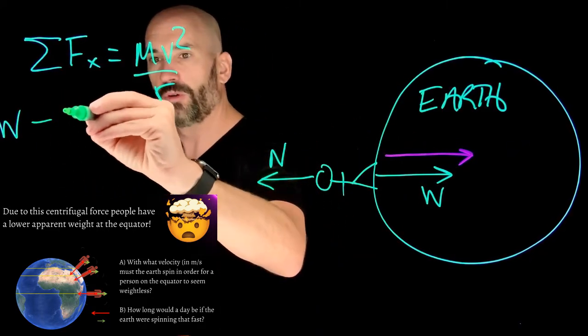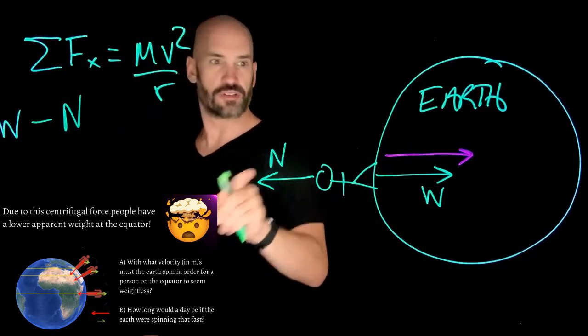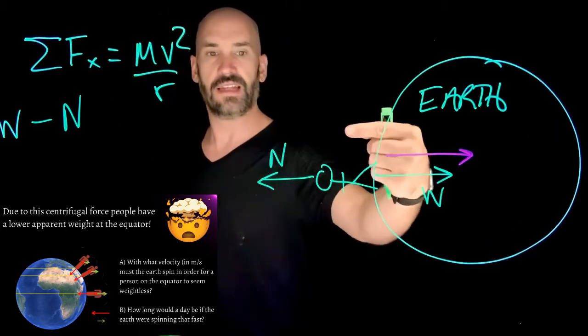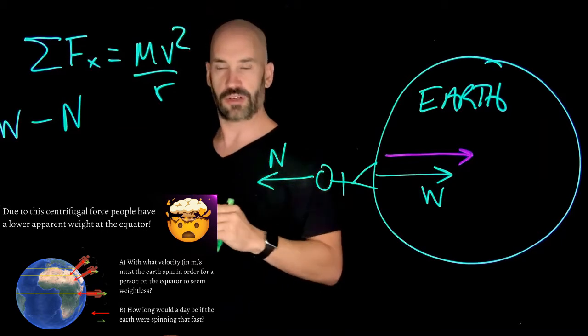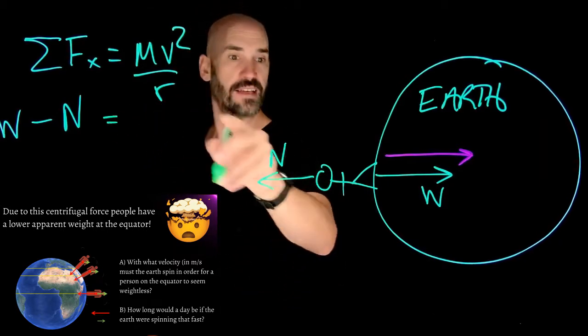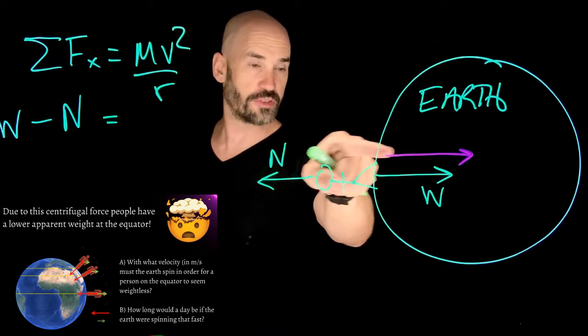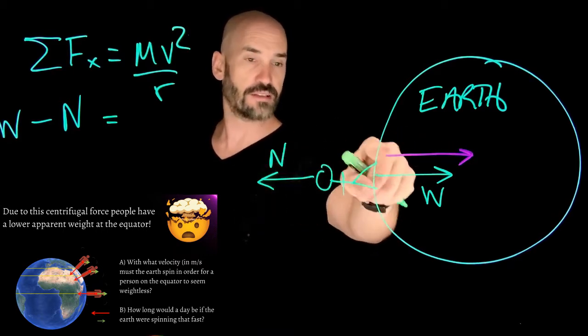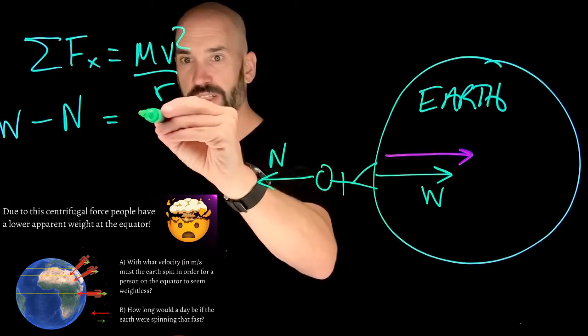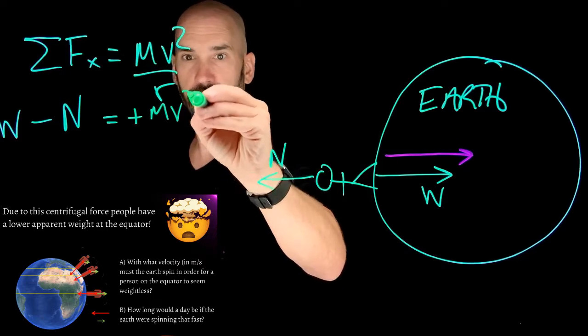And we have a normal force pointing in the negative x direction. So weight's pointing positive x direction, normal force is pointing the negative x direction. And in this case, the centripetal force, remember, always points towards the center. At this location, that's going to be in a positive x, so that's plus mv squared over r.